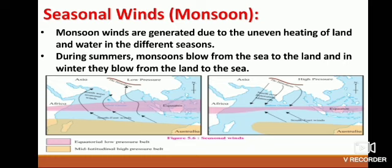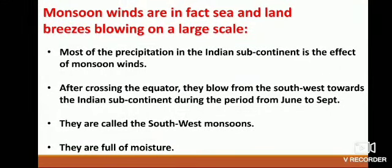Refer Figure No. 5.6 in your textbook. The effects of these winds are felt in South East Asia, East Africa, and North Australia. In the Indian subcontinent, the influence of these winds is seen in the summer and winter seasons. Due to these winds, the Indian subcontinent experiences monsoon and retreating monsoon seasons apart from summer and winter. Monsoon winds are in fact sea and land breezes blowing on a large scale. Most of the precipitation in the Indian subcontinent is the effect of monsoon winds.